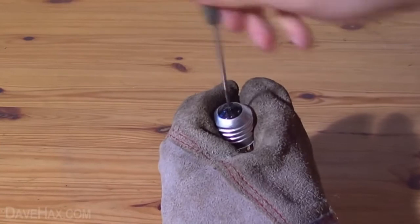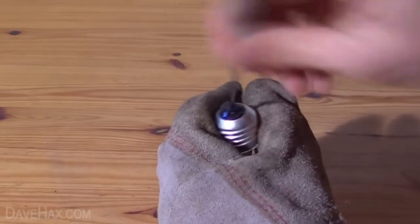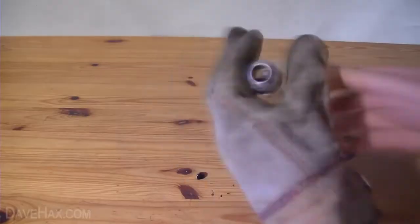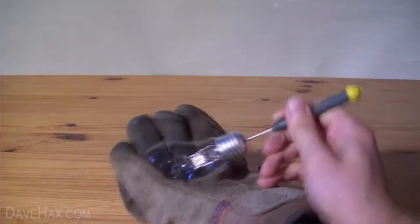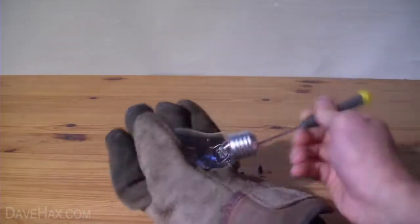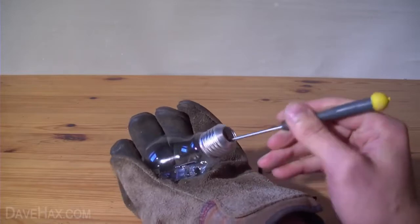Next, take a thin screwdriver, hook it through the hole and smash the glass cap off the end. Then using our screwdriver we're going to carefully smash through the glass seal into the bulb.